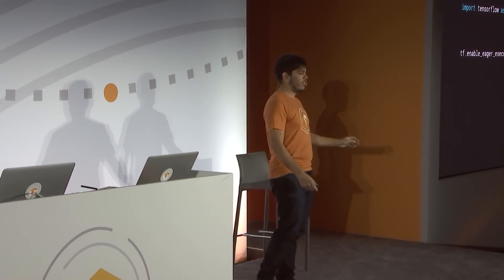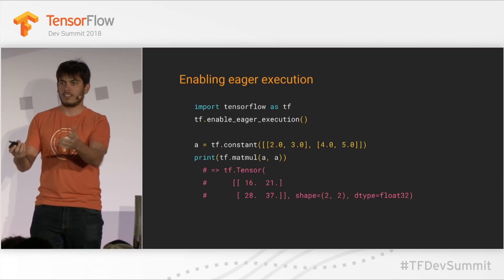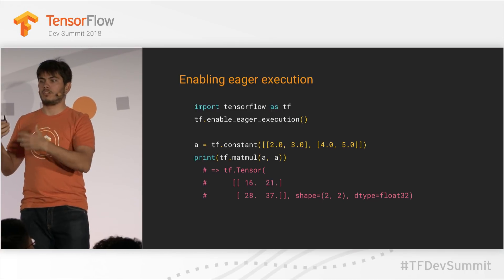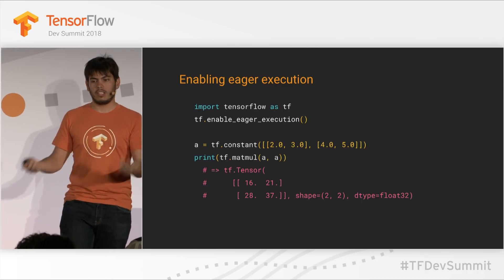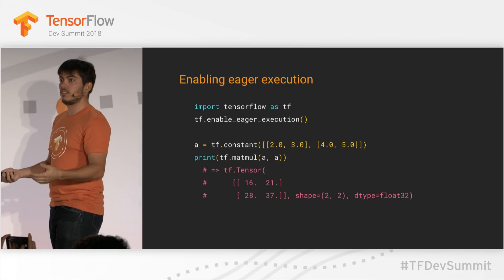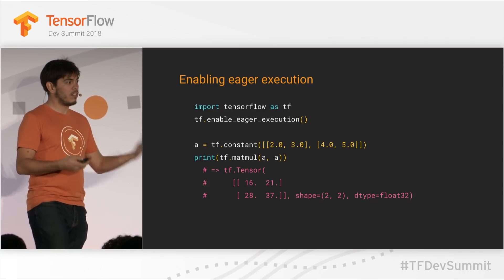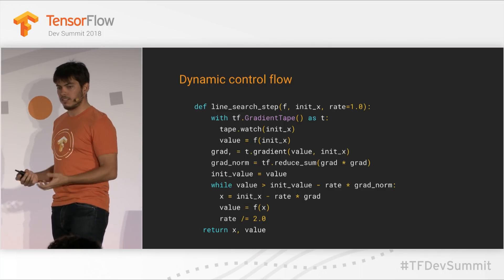So I hope you're now wondering how to use this, and the way is super easy. You import TensorFlow and call tf.enableEagerExecution. Once you do that, anytime you run a TensorFlow operation — like a matmul — instead of TensorFlow building a graph that runs later, we immediately run that matrix multiplication and give you the result. You can print it, slice it, dice it, do whatever you want. And because things happen immediately, you can have highly dynamic control flow that depends on actual computed values.